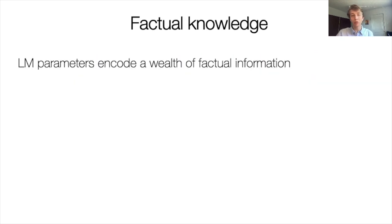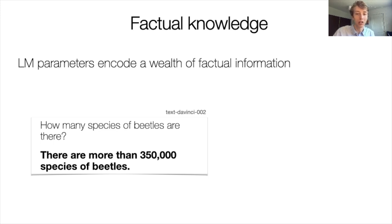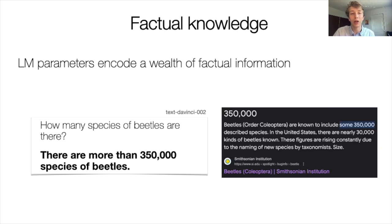Language models demonstrably encode a wealth of factual information in their parameters. For example, you can go into the OpenAI Playground and ask how many beetle species there are in the world, and it will most likely tell you a number around 350,000 and often hint at this number being a lower bound estimate. This is true and can be verified with a quick Google search, with the Smithsonian telling us the same thing.